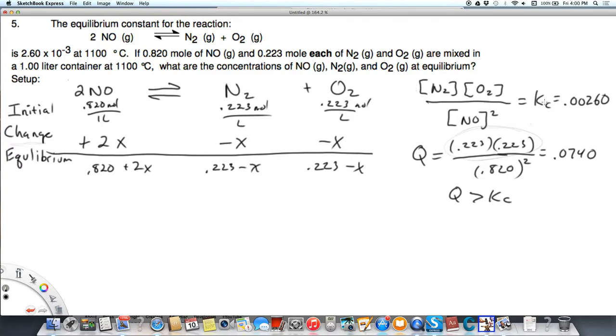And we know what K is. So I'm going to go ahead and plug this in. 0.00260 is going to equal 0.223 minus X times 0.223 minus X. So that's squared over 0.820 plus 2X. And then since that's my equilibrium,